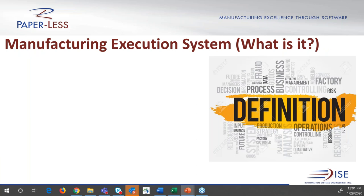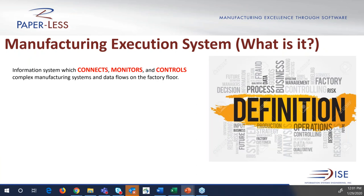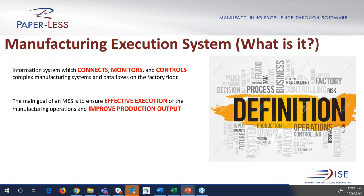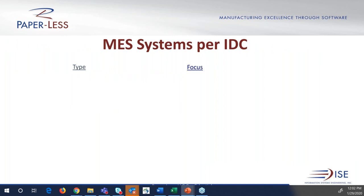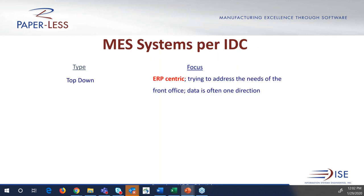Looking at a Manufacturing Execution System, there are really three things it tries to convey: it connects, it monitors, and it controls pretty much anything that goes on under a manufacturing floor from a data perspective — users, machines, etc. The main goal is really to improve your bottom line and production output on the shop floor. Looking at industry standards, there's a company called IDC — similar to Gartner — whose purpose is to evaluate systems and determine their value to a business. IDC defines MES in three formats.